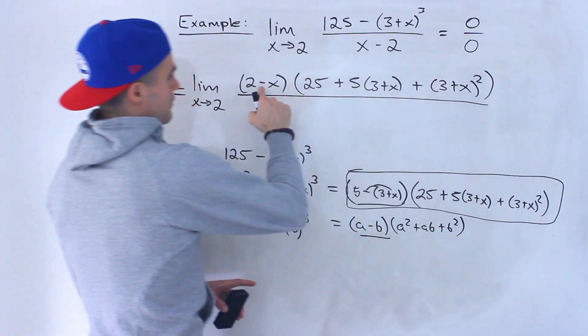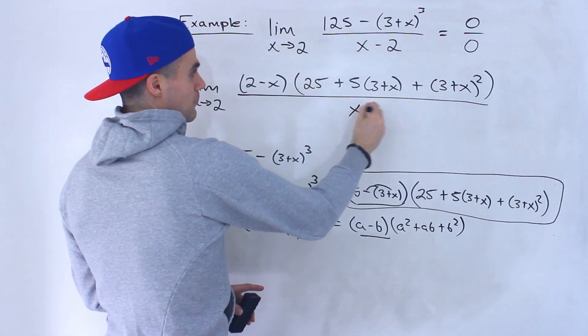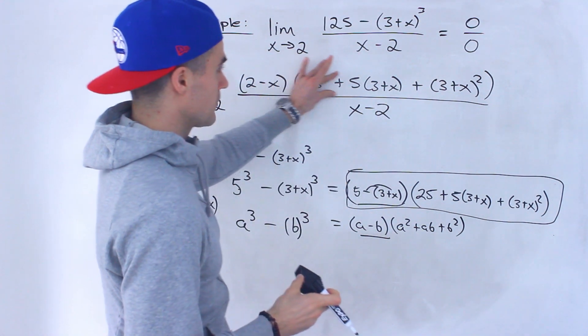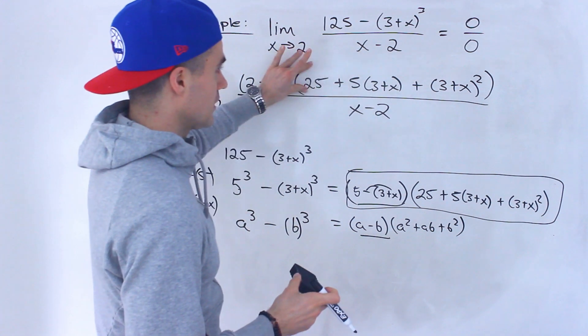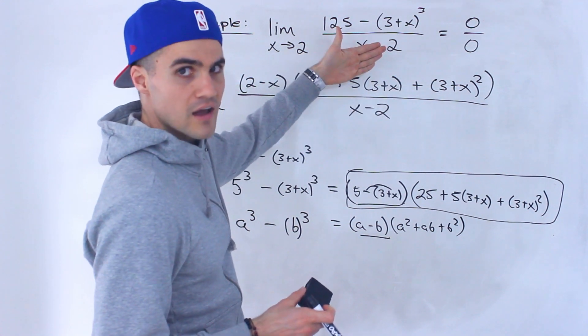This part of this bracket and then the x minus 2 at the bottom are actually going to cancel out, and then we're just going to plug in 2 for x. So we could just plug in 2 over here for all of these x values and then just simplify from there.